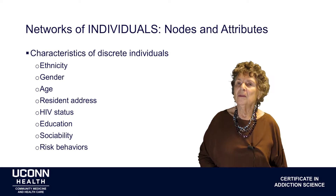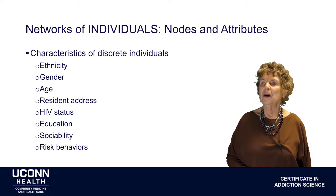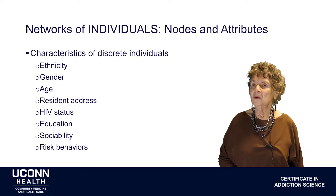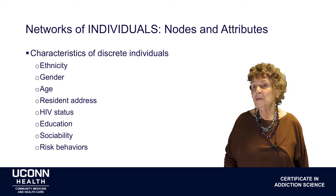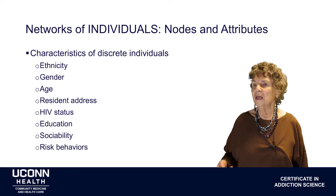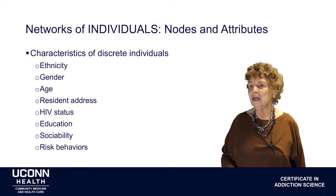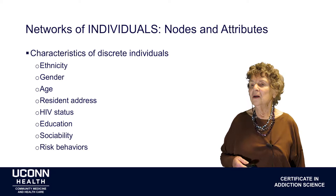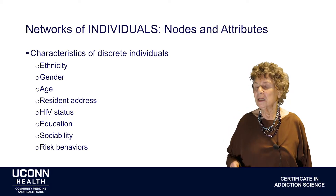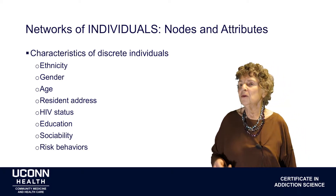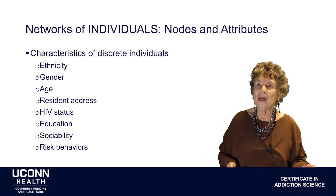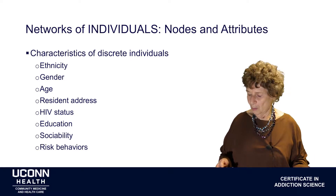The attributes of individuals as nodes in a network could be ethnicity, gender, age, where they live, their HIV status, their education, their global health assessment, their sociability, their weight, their risk behaviors, and so on. The attributes can be just about anything you're interested in, as long as you can attribute them to every node in your network.